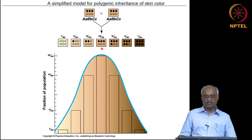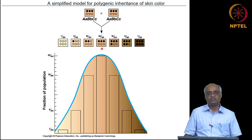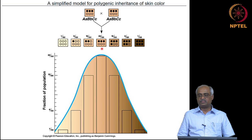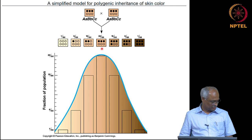Variation in the phenotype is usually a good indicator of polygenic inheritance. Human height is a good example, and in this particular organism, the color shade is a good example of polygenic inheritance.